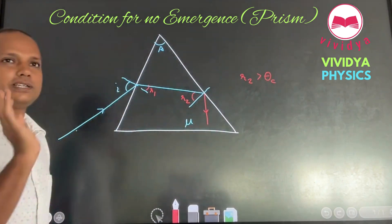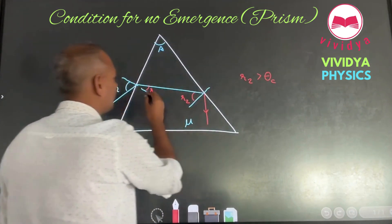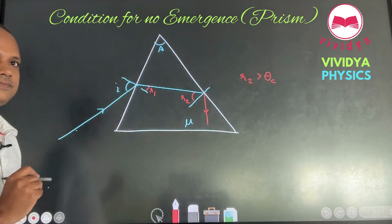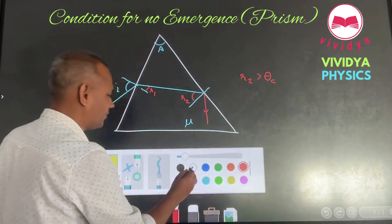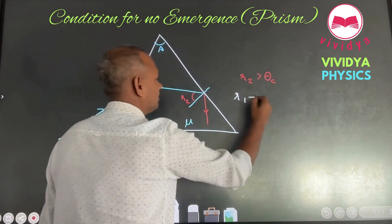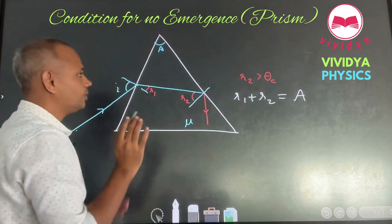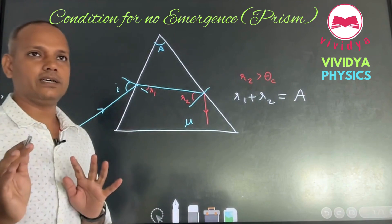R2 should be greater than critical angle. Now check one more thing. What about R1? We know that R1 plus R2 equals A, right? We want to know that whatever is the value of R2, R2 should be greater than critical angle.